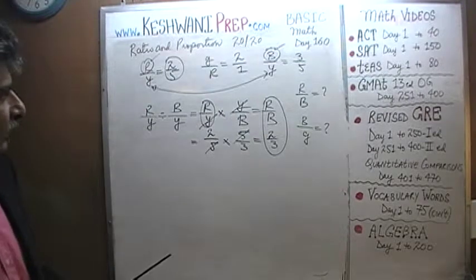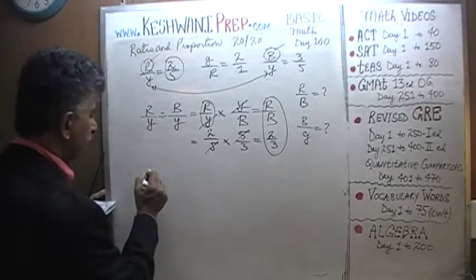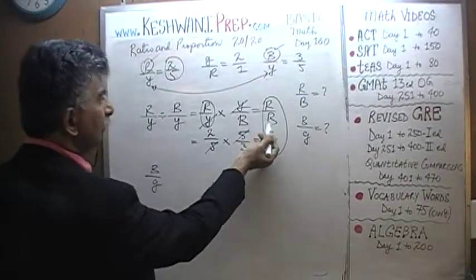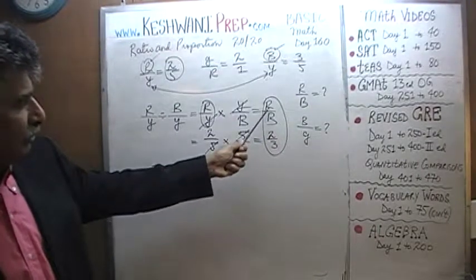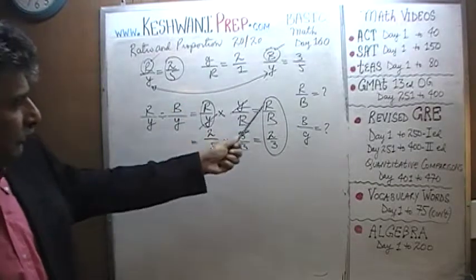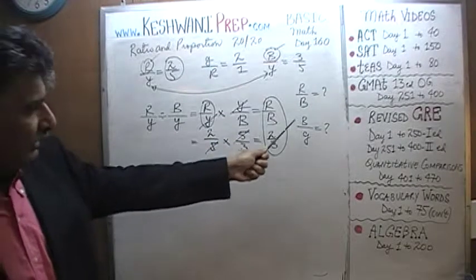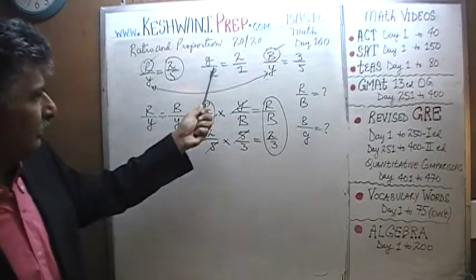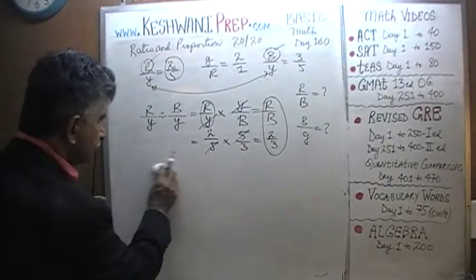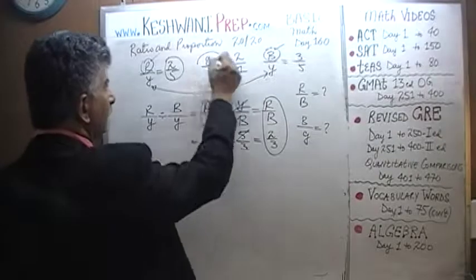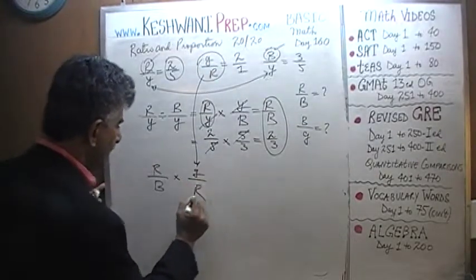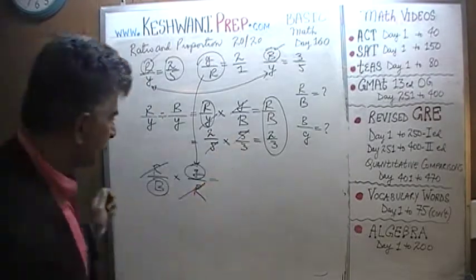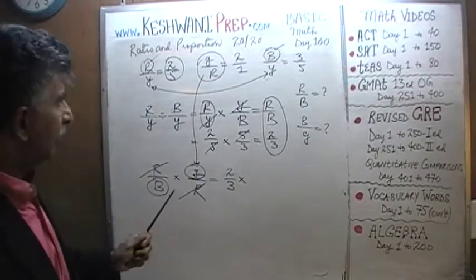Now we have to work on the second one, which is blue to green. We already have red to blue. What we need is blue to green. If we can find a ratio which combines the red and the green, we can get rid of the blue. Red to blue times green to red — watch: red to blue is what we know, and if we multiply by green to red we get rid of the blue and end up with green to blue.